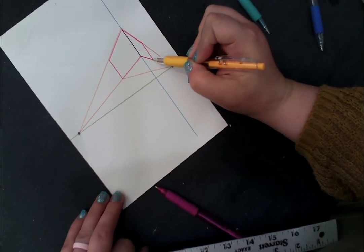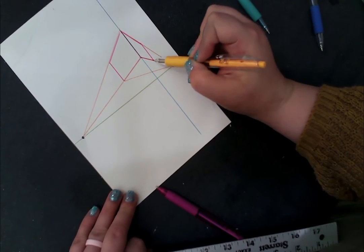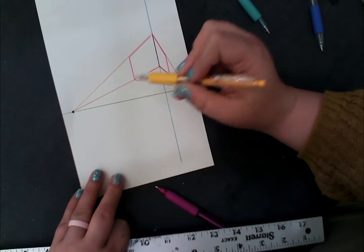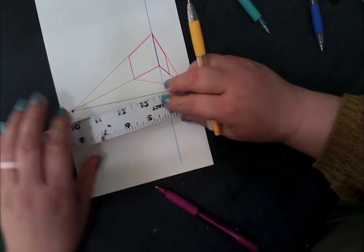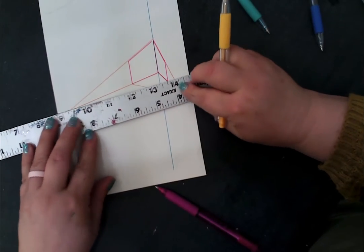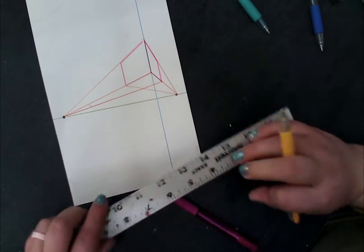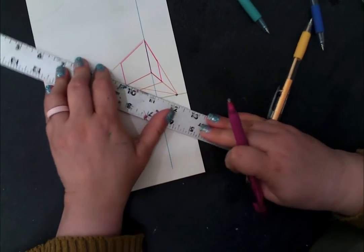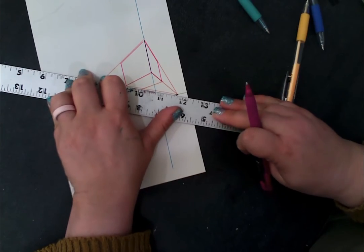And then for this corner, which is on the right side of my station point, I'm going to have to go back to the opposite vanishing point to the left. Now I can use my pink pen to create my true bottom.